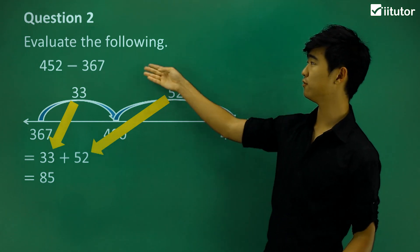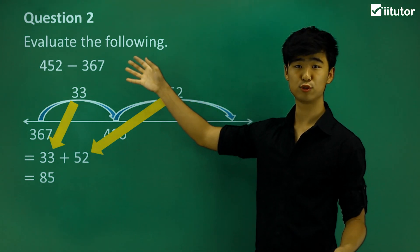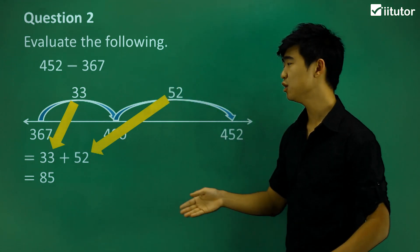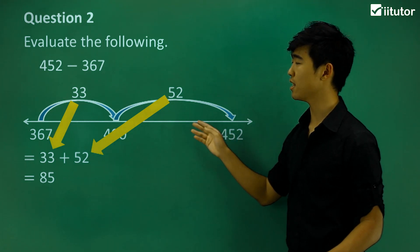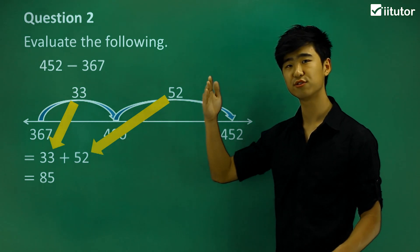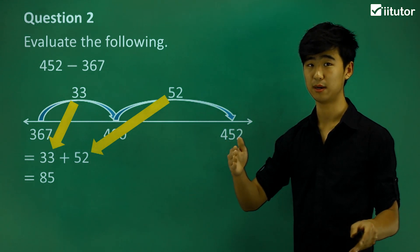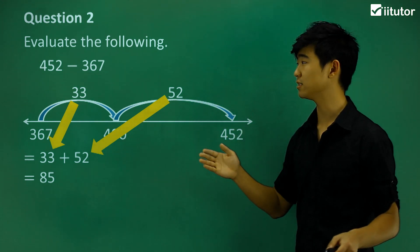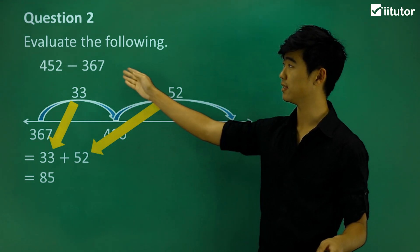What we've done here is evaluate two subtraction problems using the number line. We found a benchmark number—in this case, 400—that's very easy for us to work with, and we added the differences to find the answer to the subtraction.